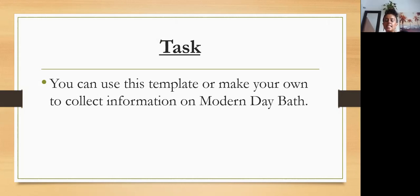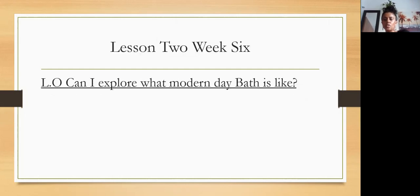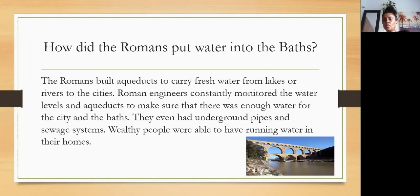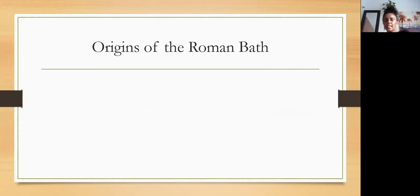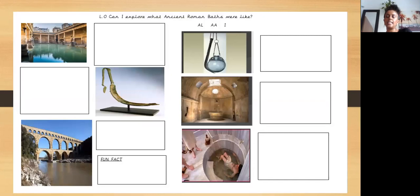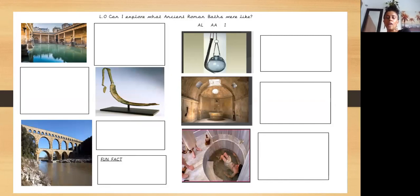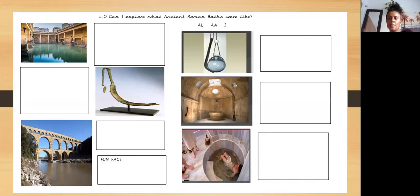For today's activity, you can use the template seen at the beginning of the video as an example, or you can make your own to collect information on the Roman baths. Go back through all of the information and see if you can find some facts. Include some fun facts, the different types of Roman baths, what the baths were used for, how much they cost, and anything you find valuable to understanding Roman baths. Good luck with your activity — I look forward to seeing your work on Tapestry. Bye everyone!